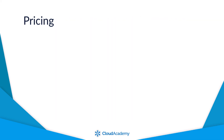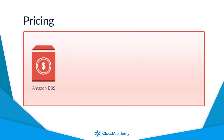Whereas with Amazon S3 you pay for only the storage you consume, with Amazon EBS you are charged for the storage provisioned to you per month. This means if you provisioned an 8 GB EBS volume, you would be charged for that 8 GB regardless of whether you are only using 1 GB of storage on that volume. There is a different cost to each volume type discussed earlier, and again the cost is region dependent.